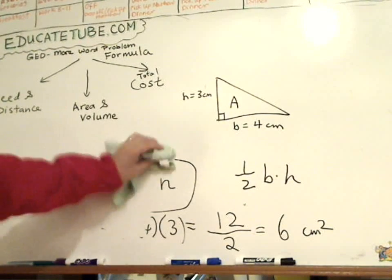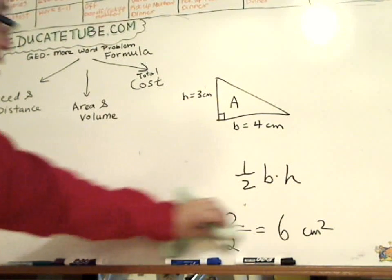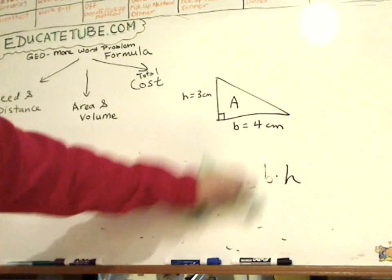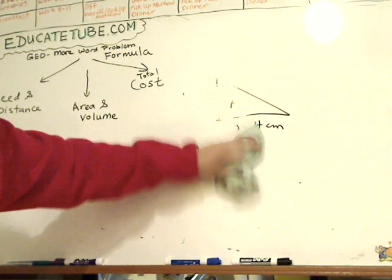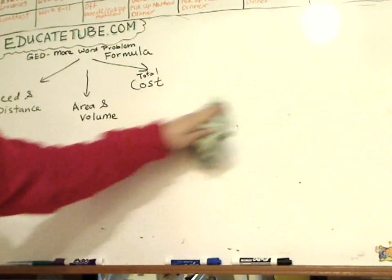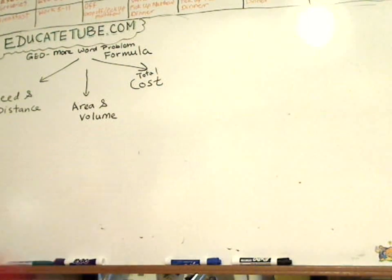We talk about the area of a circle. And let's pause for now. Now, I'm going to continue on my second video on this formula to do the volume and then we'll finish off with the cost, the total cost formula.